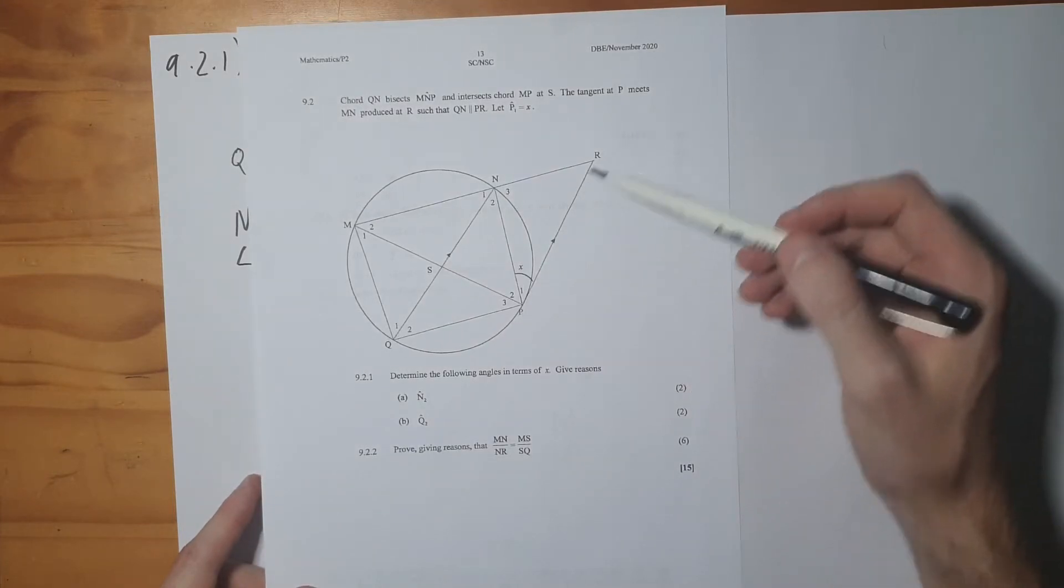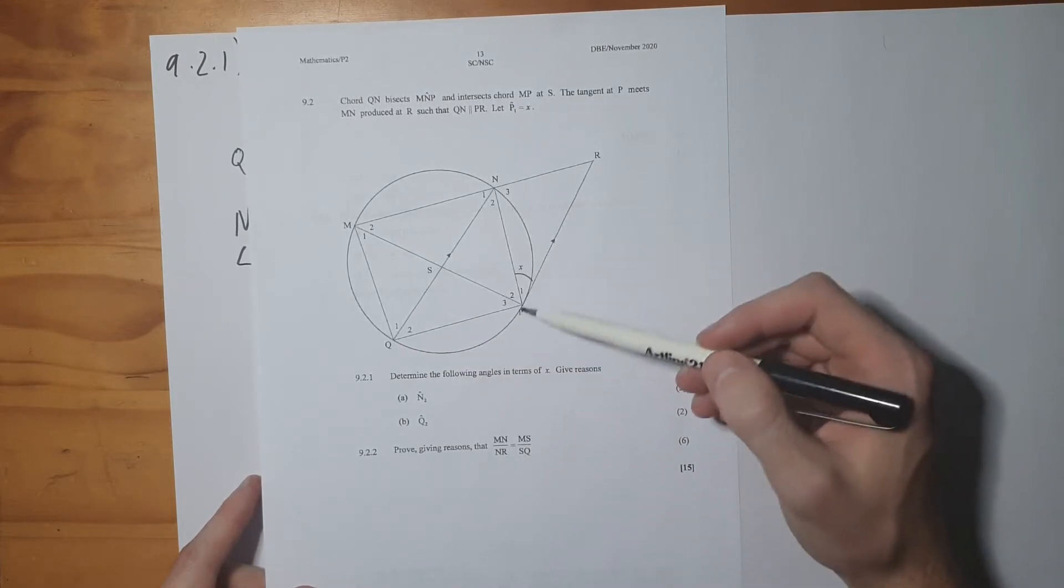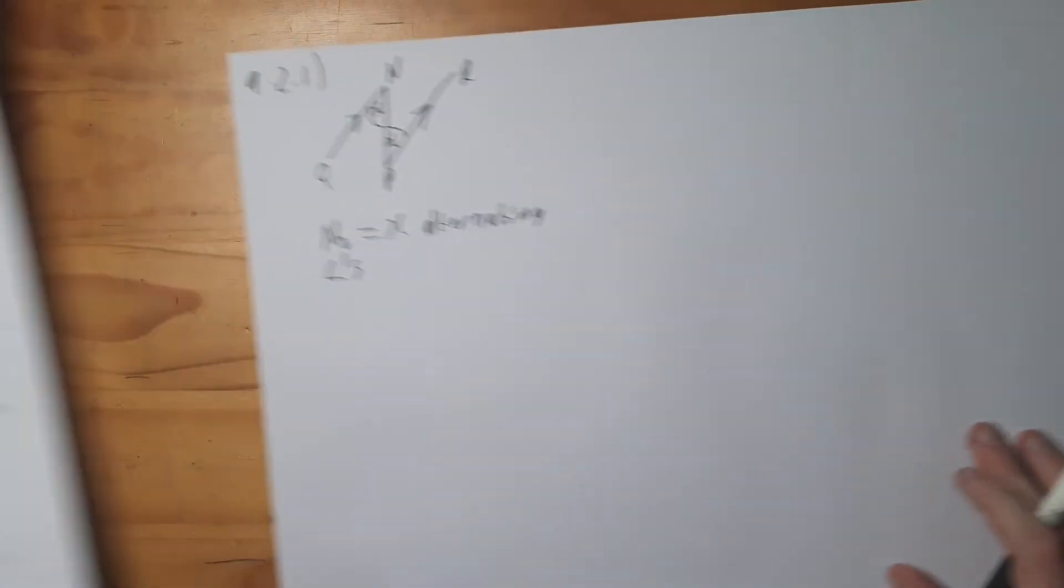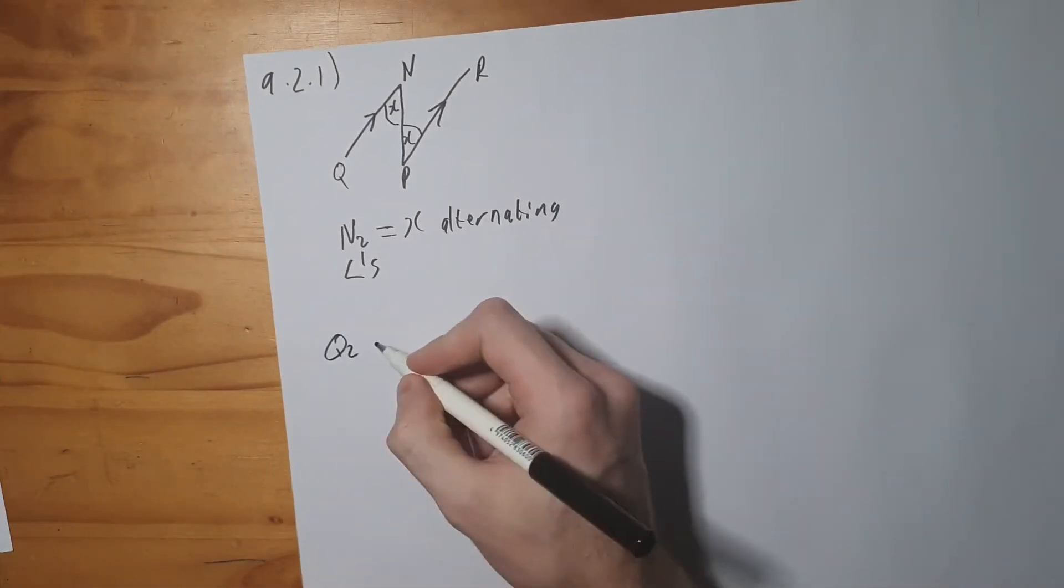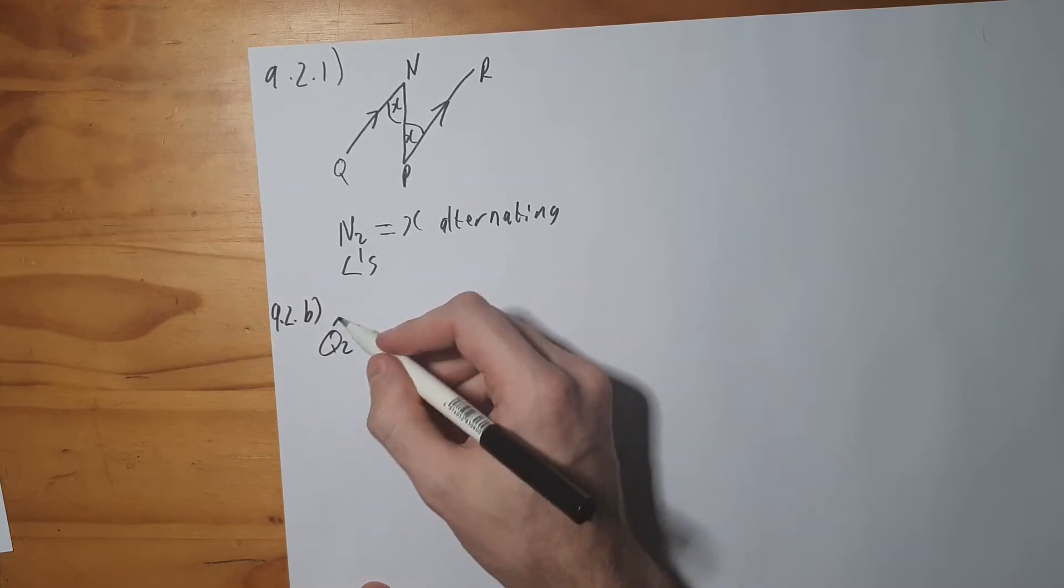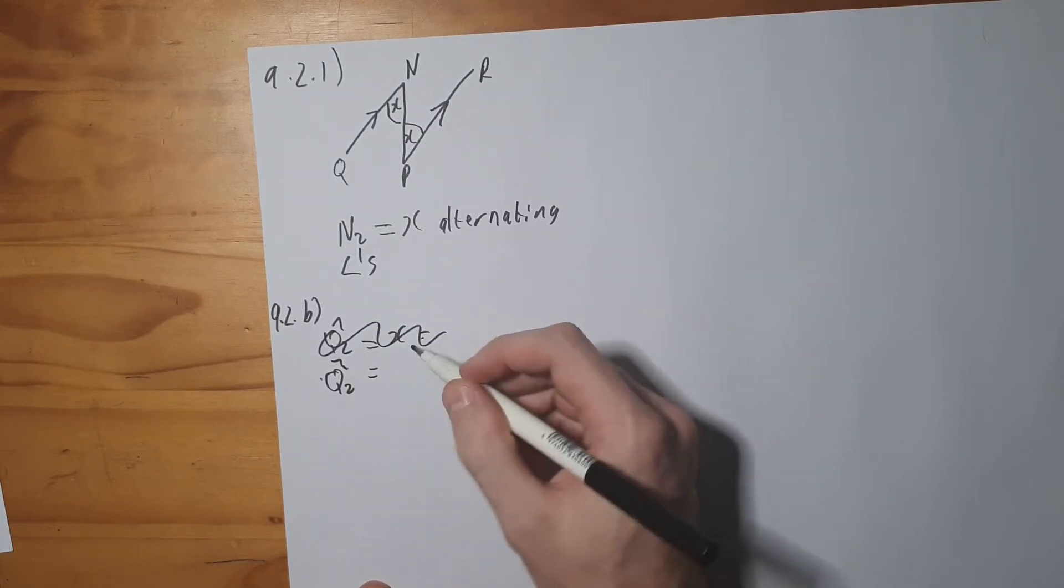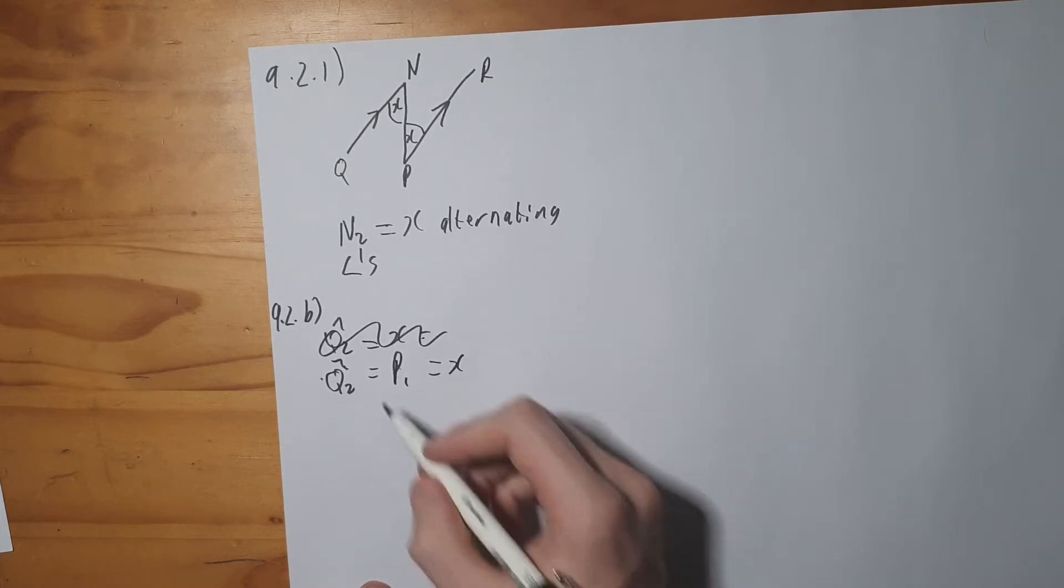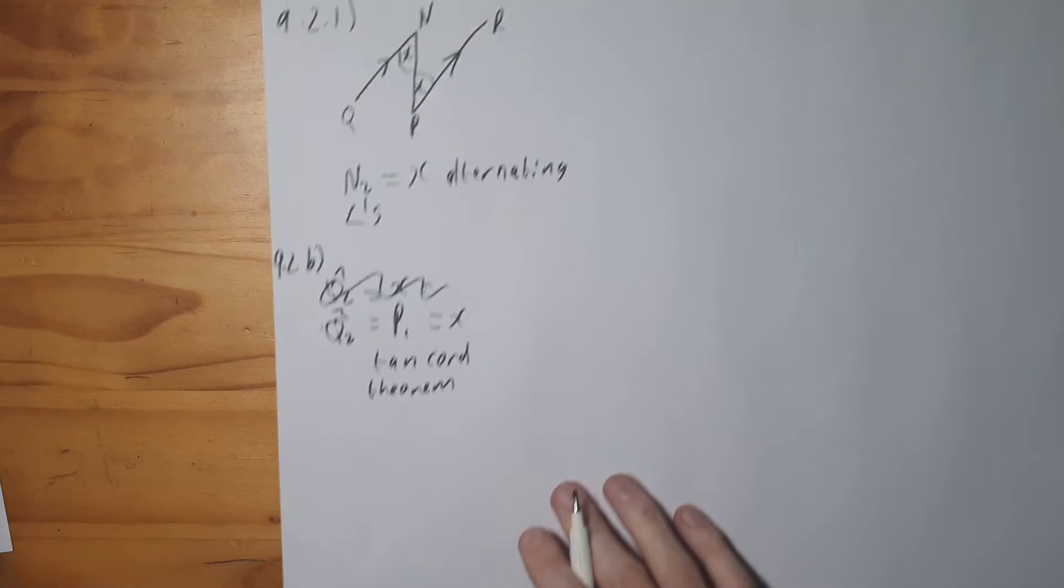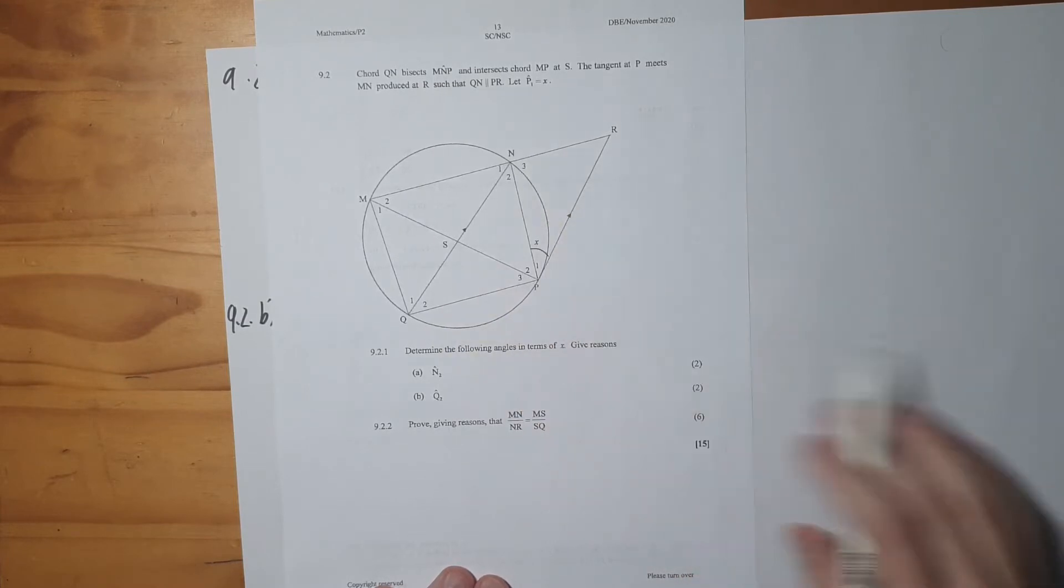So, if you note here as my tangent, then over here is my triangle, which means that the angle between the tangent and the chord is equal to the opposite interior angle of the triangle. So, we can see that Q2 is also going to equal to X because Q2 is going to equal to P1, which equals to X, and this is because of our tan chord theorem.